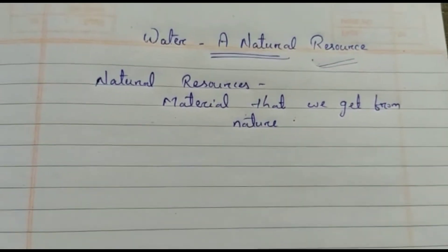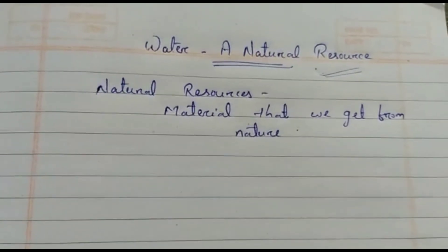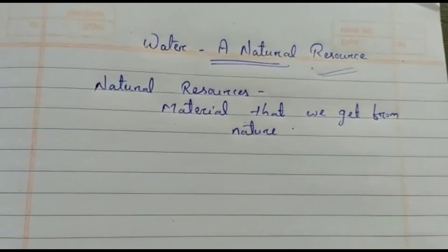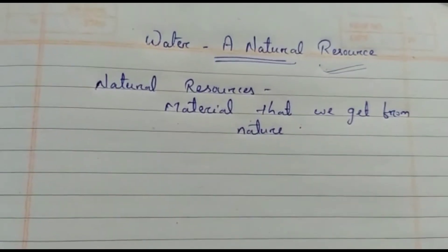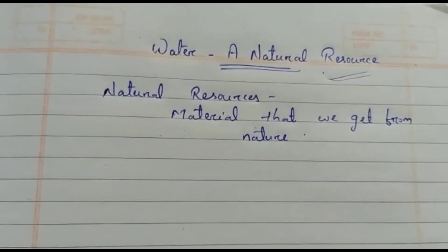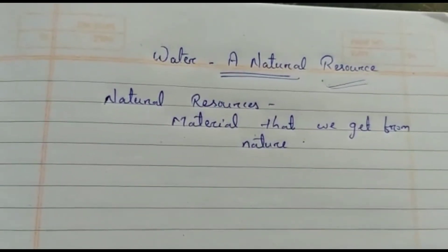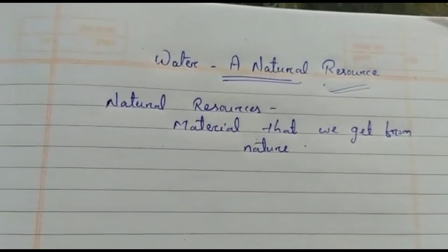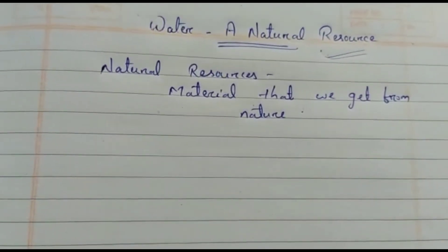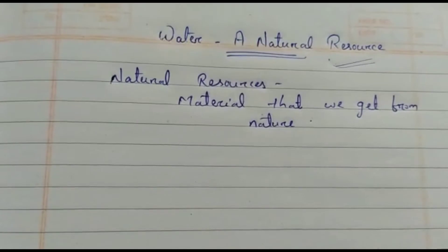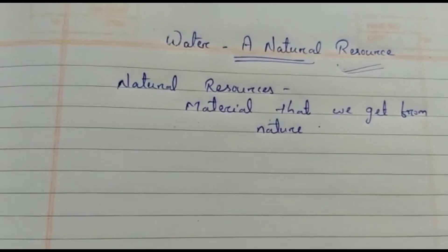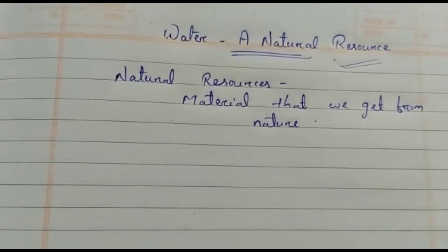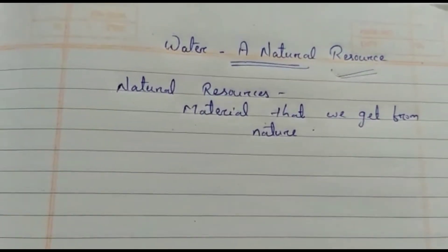Not only water — there are so many things we consider as natural resources. We need oxygen for breathing, which we get from nature. Medicines from plants, food from plants and animals, metals from ores, energy from sunlight, minerals from the earth's crust, water for drinking and other purposes, and fossil fuels for energy — all these are natural resources that we get from nature.